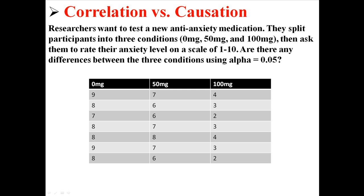This is a true experiment because the subjects were randomly assigned to three conditions where the independent variable — dosage — was manipulated. So the only thing that should be different between these three conditions is the dosage. That way, if we find out that the groups are in any way different, the only reason they would be different is because of the dosage. We can imply that the dosage caused them to be different because we performed a true experiment.